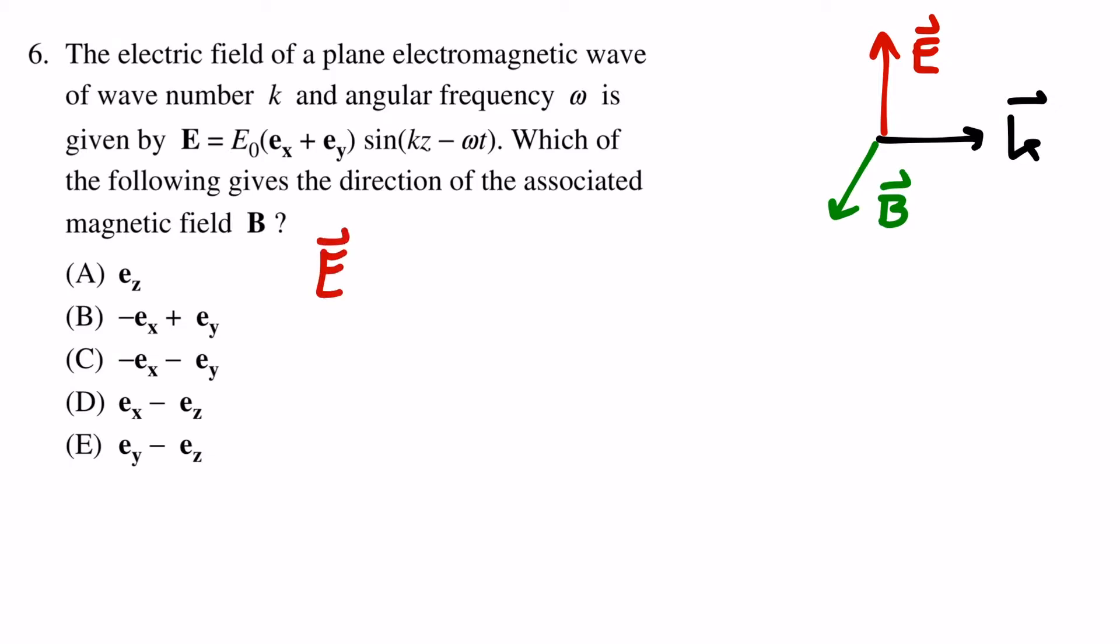The electric field points in the direction and the wave vector in the direction. This is obvious from the terms within the sine function, since for a wave there is the inner product of the wave vector with the position vector, and the only possibility that the result yields k times z is that kx and ky are zero.